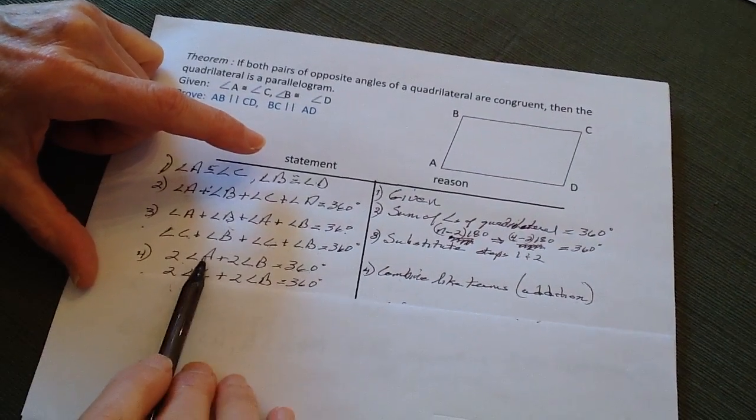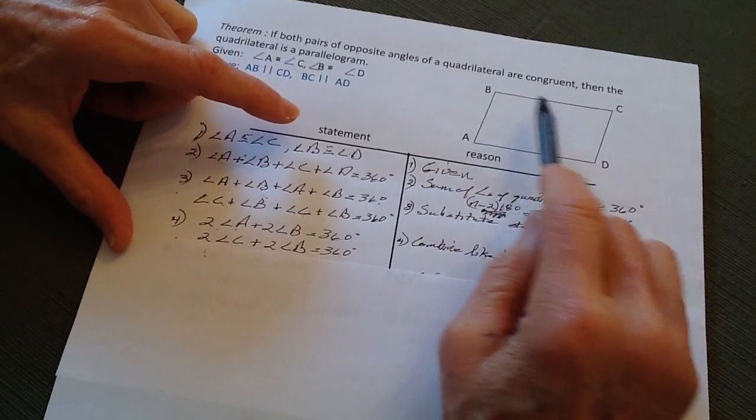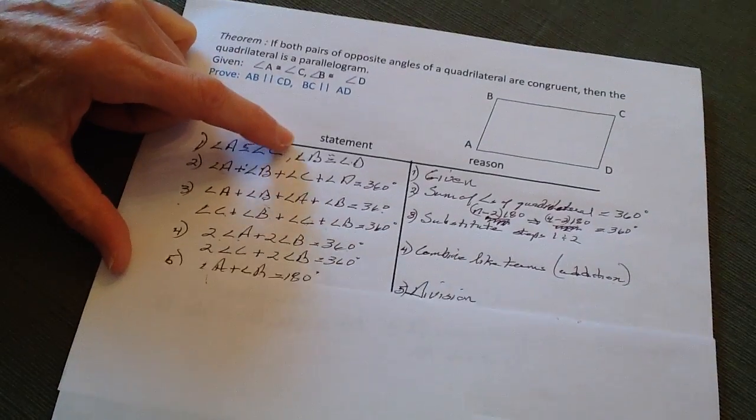And then, again, here, so now I've got two of these plus two of those will equal 360 degrees, and two of those plus two of those will equal 360 degrees.